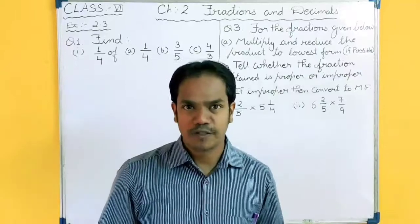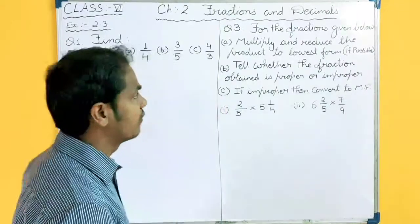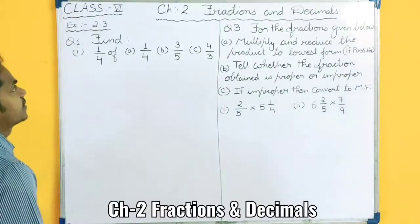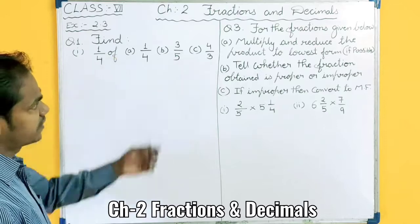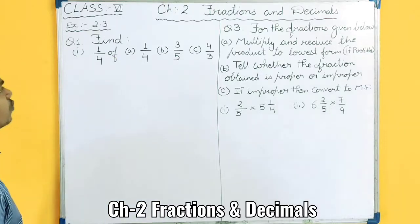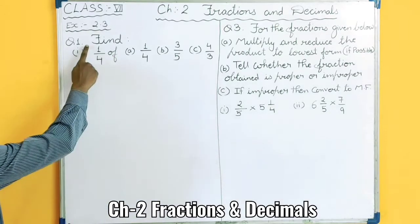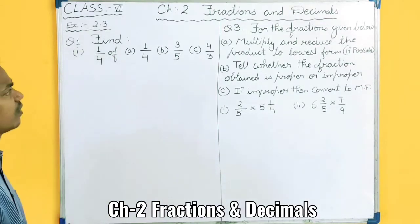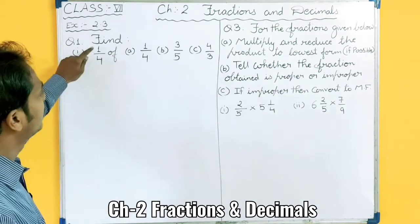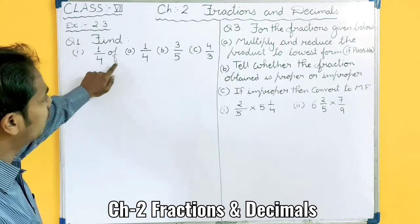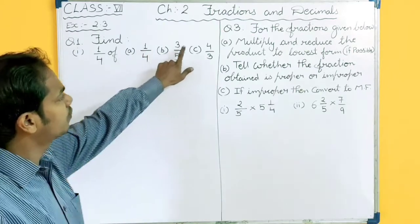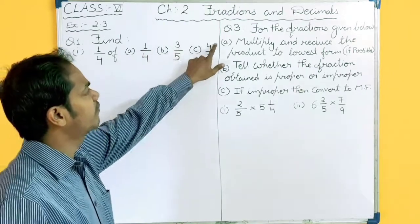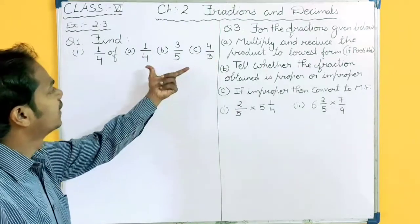Good morning students. Today we will start Exercise 2.3 — Fraction and Decimal, Chapter 2. Question 1: Find one fourth of one upon four, three upon five, and four upon three. Three parts are given.